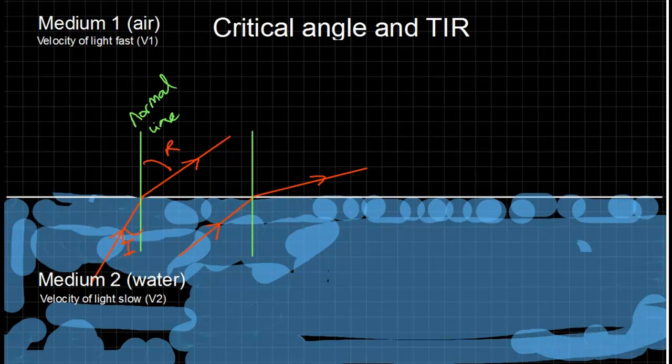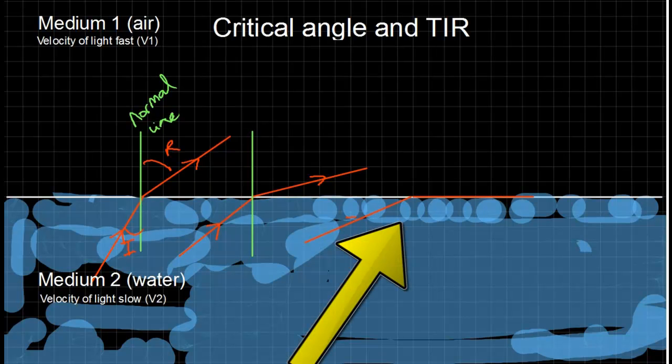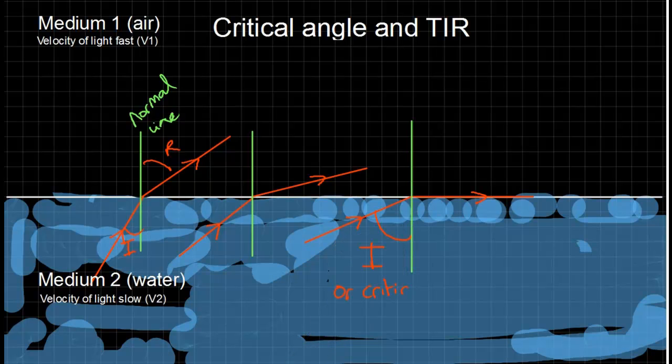If you're going from a slow medium to a fast medium, the refraction will be away from the normal line. As you increase the angle of incidence, you increase the amount of refraction until you hit a special point where the angle of refraction is 90 degrees. We call this the critical angle.